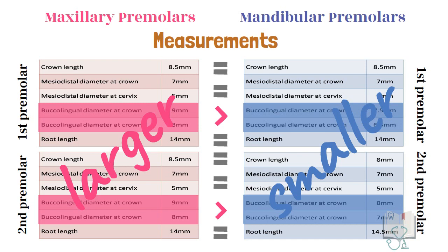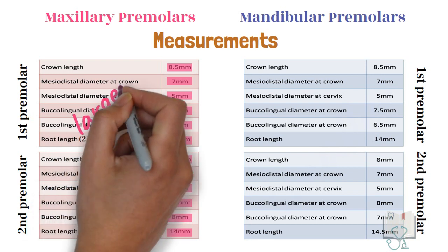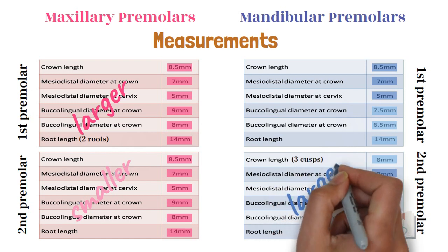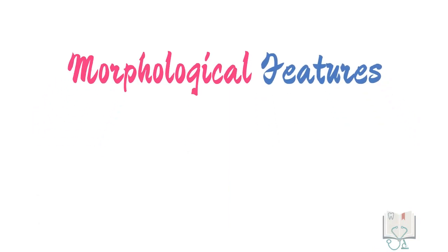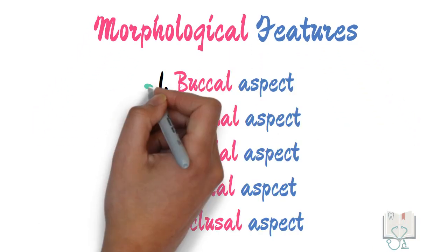Also, within the arch, if we look at their dimensions, both maxillary premolars appear equal in size. But if we consider the two roots, the first premolar is larger than the second premolar. However, in the mandible, the second premolar has greater dimension than the first premolar. Additionally, the three cusps make the second premolar the larger of the two premolars. Now let us study the morphological differences from individual aspects, starting with the buccal aspect.